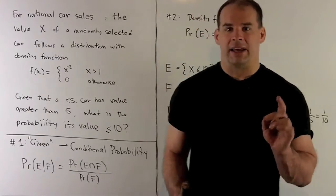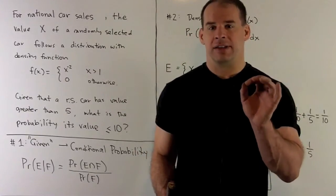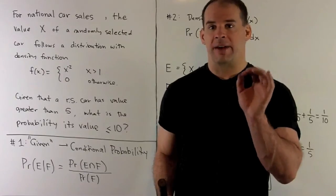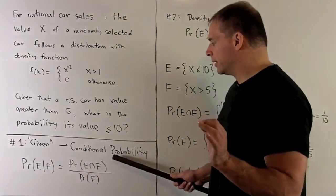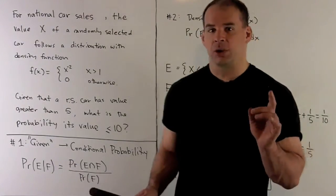So the idea is your universe is gonna shrink down to the event F. We're assuming F occurs, and then we just want to know what part of E takes up F. So that's your conditional probability.